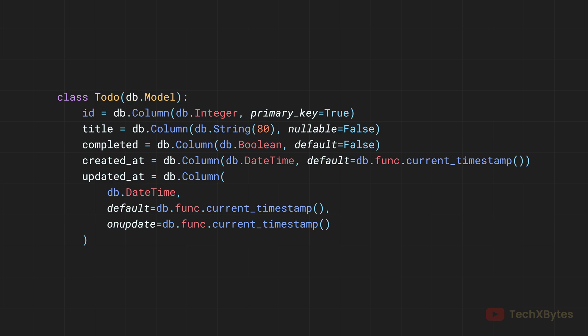Inside the Todo class, we define several attributes that correspond to the columns in our database table. Each attribute is defined as a class variable with a specific type and constraints. For example, id is an integer column that serves as the primary key, title is a string column that cannot be null, and completed is a boolean column with a default value of false. We also have two timestamp columns, createdAt and updatedAt, which automatically set the current timestamp when a new record is created or updated.